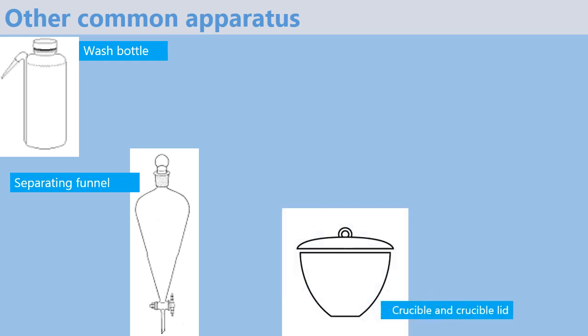Next we have a crucible and a crucible lid. A crucible is used when heating solid substances, usually those that require strong heating.